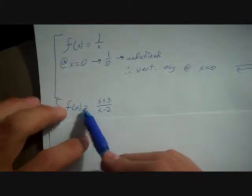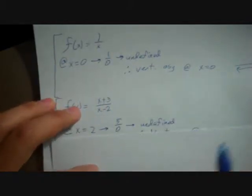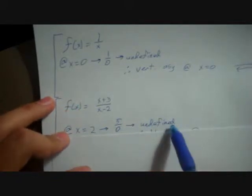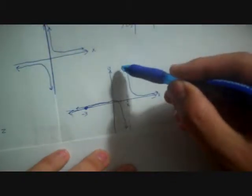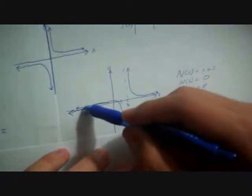Now let's try a more complicated function: f of x equals x plus 3 over x minus 2. At x equals 2, we get 5 over 0, which is undefined. Therefore, we have a vertical asymptote at x equals 2. Our numerator n of x is x plus 3, so if our numerator equals zero we have an x-intercept, a root. At x equals negative 3, we have zero. So we have a vertical asymptote at x equals 2 and a zero at x equals negative 3.